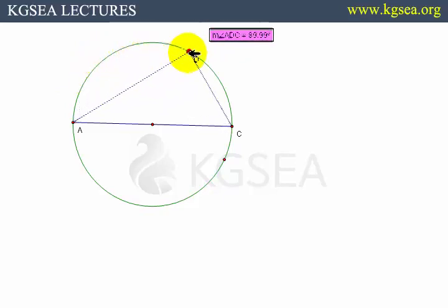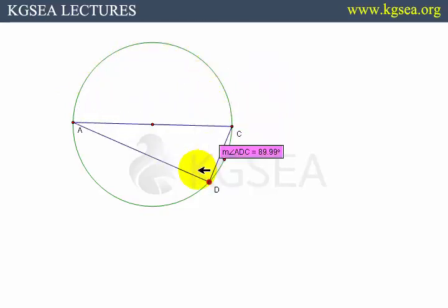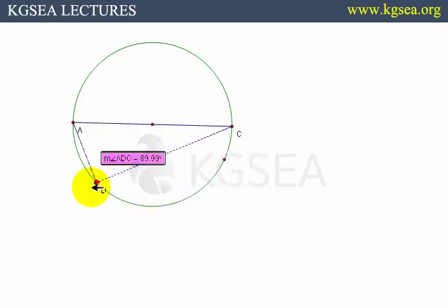Very nice. So anytime you see a triangle that is inscribed in a circle with one side being the diameter of the circle, then you know you are getting a right triangle.